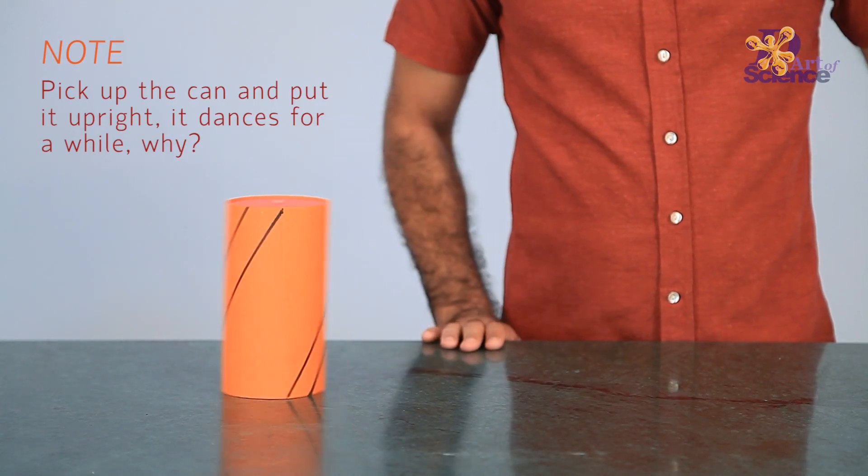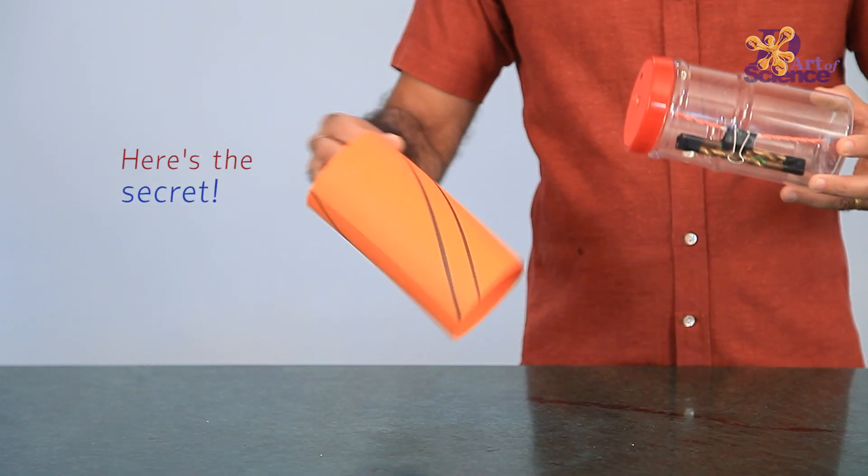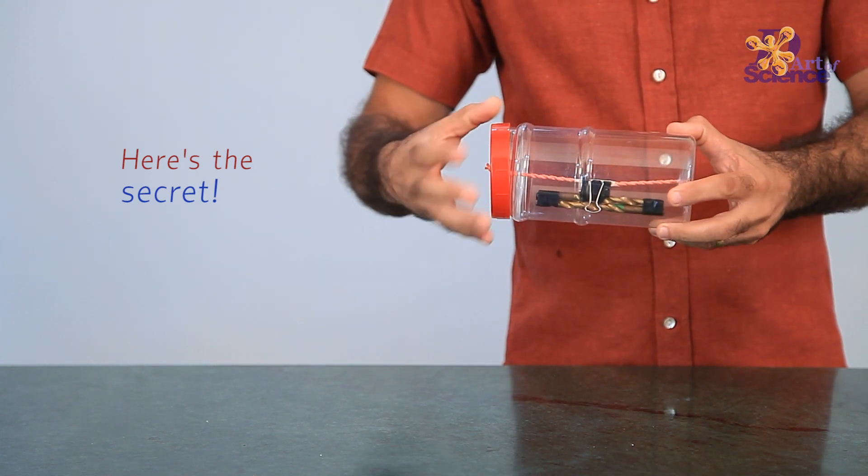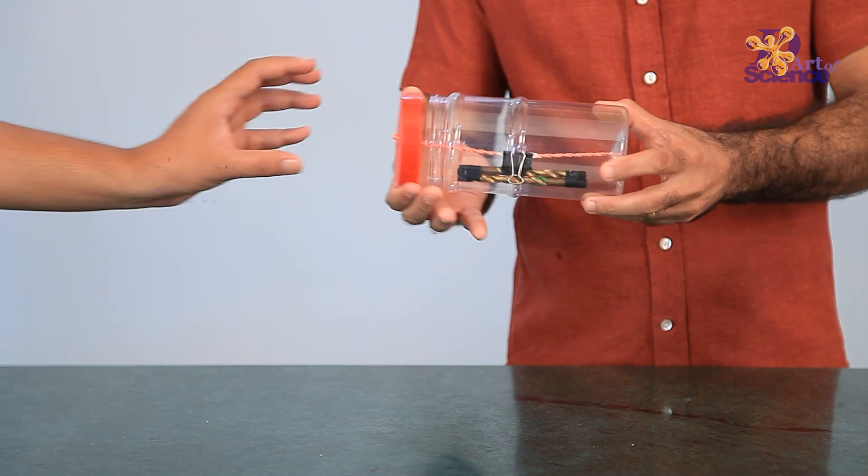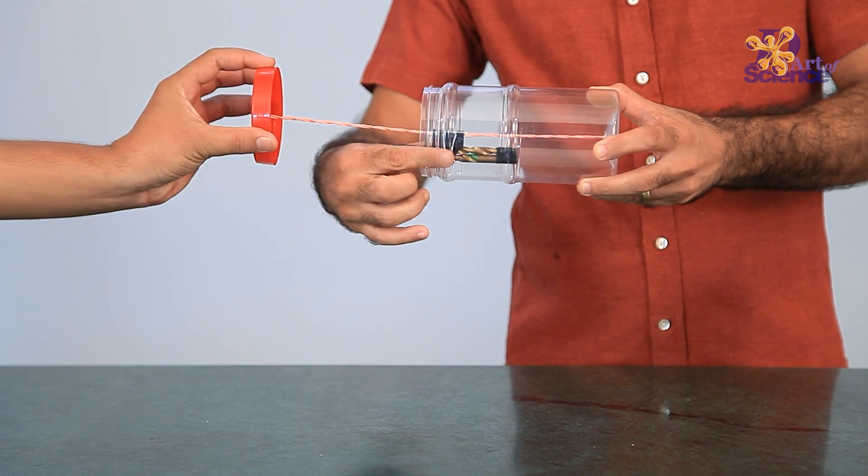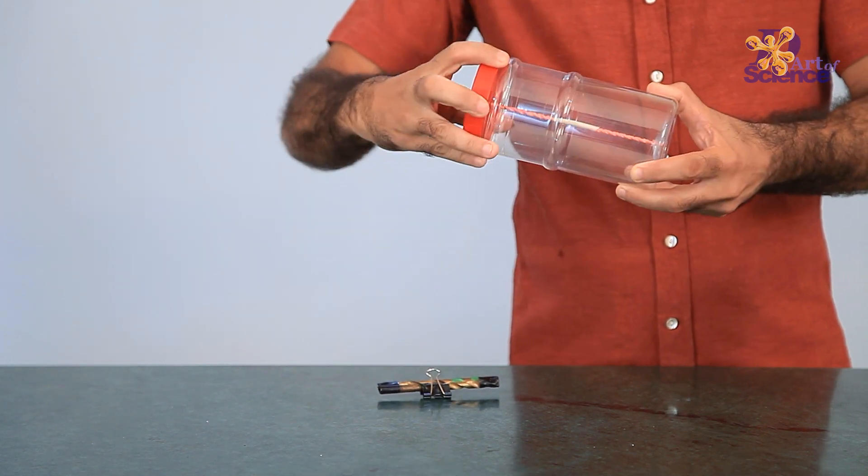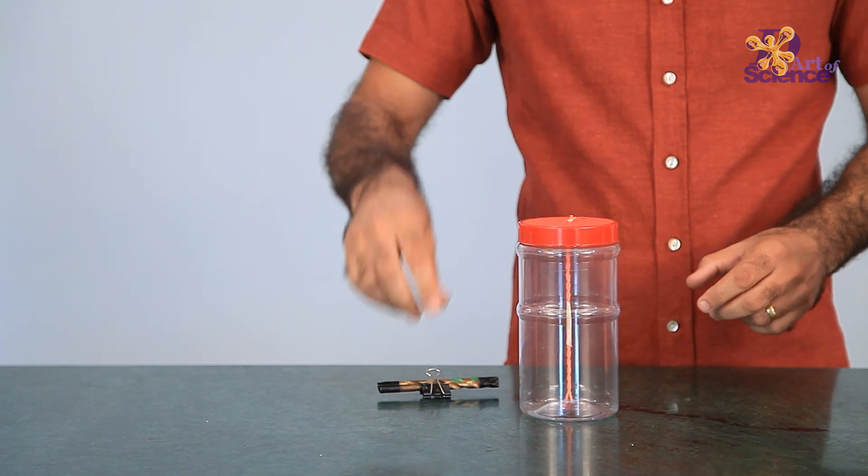Hey, how did that work? Well, rubber bands are elastic materials that resist change in their shape. When we twist the rubber band and leave it be, it tries to untwist and come back to its original state.